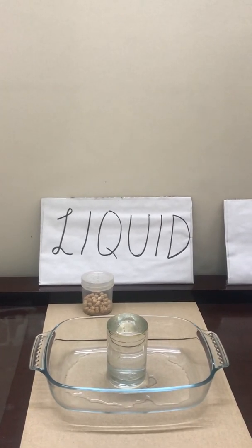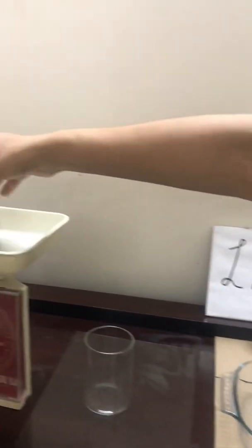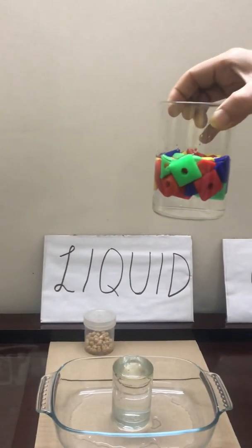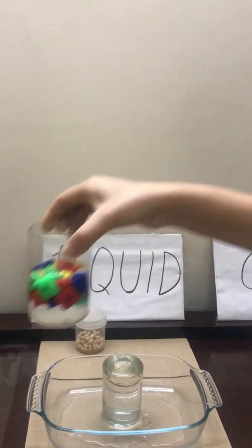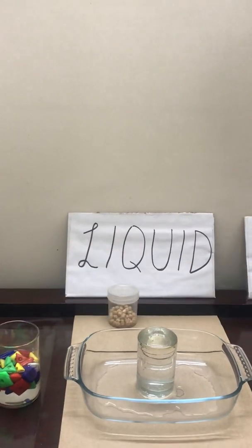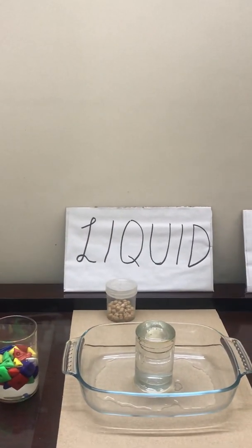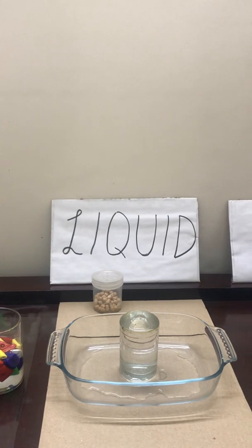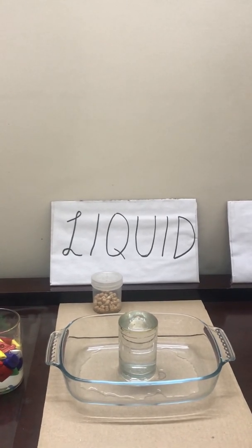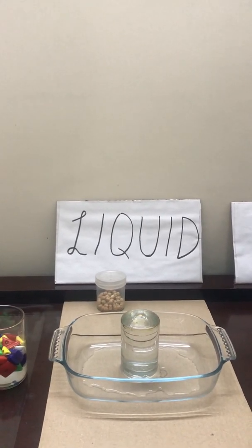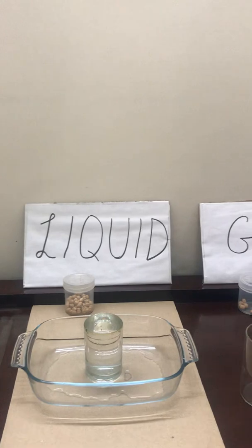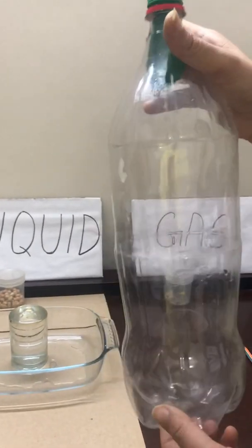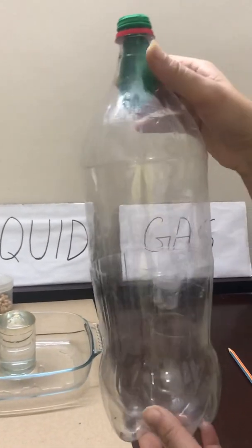Before this we had done an experiment where water was actually taking up the space of this particular glass and was taking the shape of this glass. So this experiment is showing that water occupies space — that means matter occupies space. Now let's take another example for gases. This is an empty bottle which is actually not empty because it has air inside it.